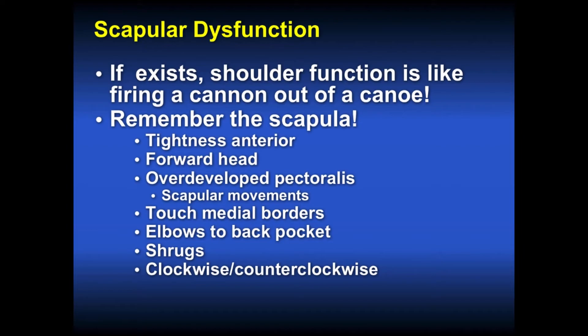We can do rehab — shrugs, clockwise and counterclockwise motion — to improve scapular position, which is a good way to start treating the multidirectional instability patient. If the shoulder is painful, oftentimes the scapula is not in a normal position. If the scapula is out of position, that is like trying to fire a cannon out of a canoe.